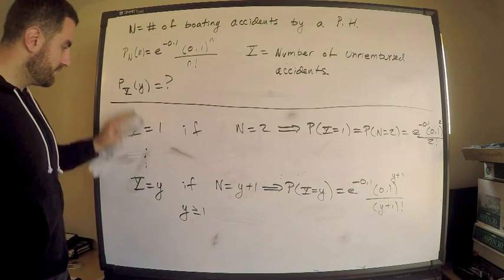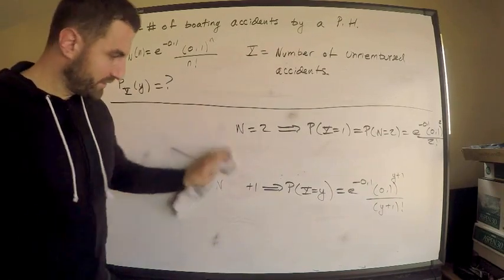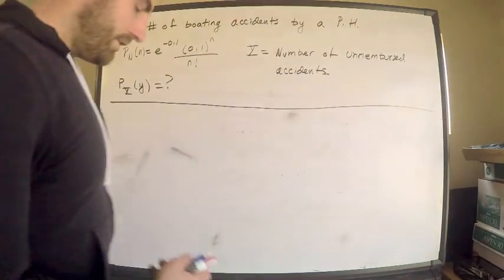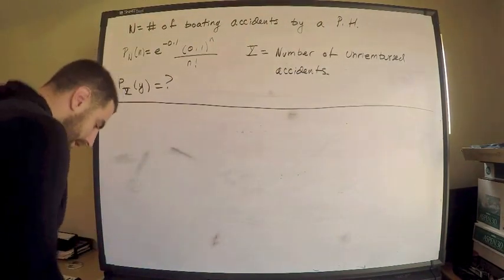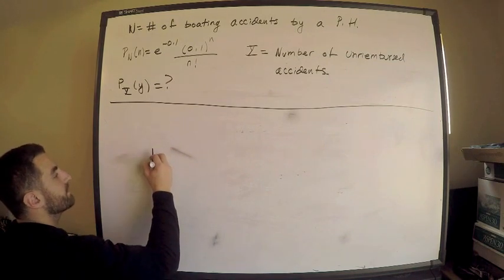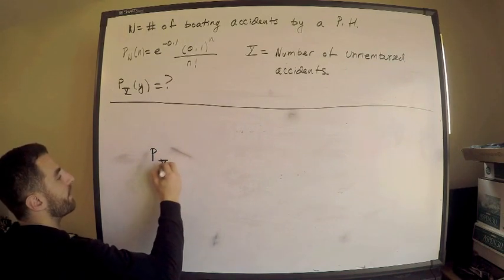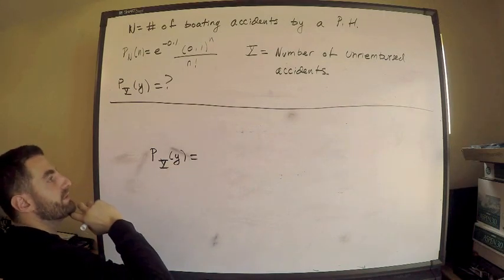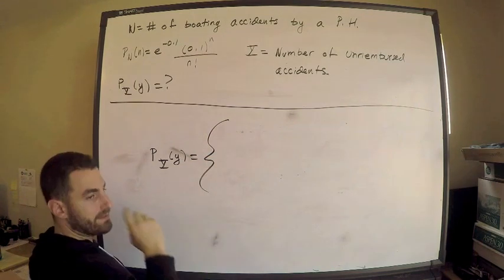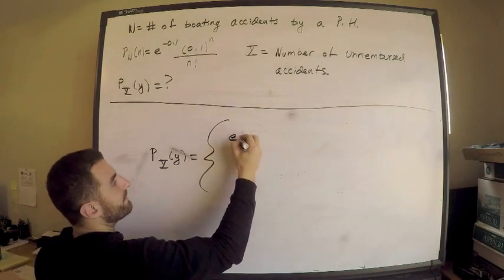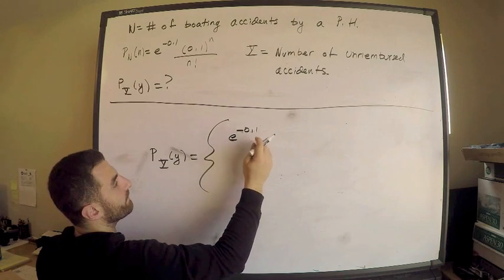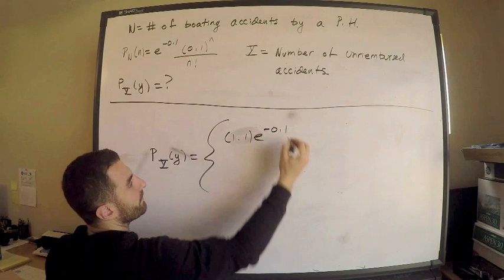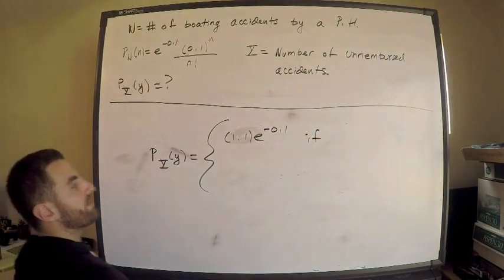So what's our conclusion? Our conclusion is the following. We have that the probability mass function P_Y of Y, representing the number of unreimbursed accidents, this is equal to the following. It's equal to e^(-0.1). Well, just aesthetically, let's write the 1.1 first. 1.1 times e^(-0.1). This is if Y is zero.